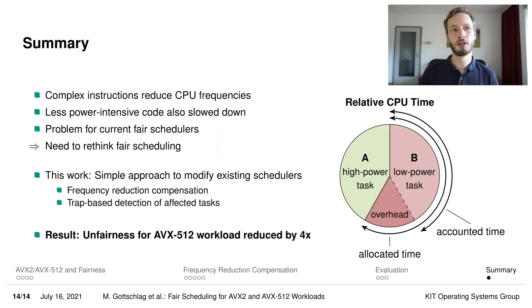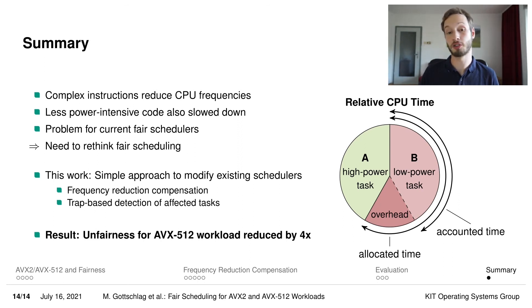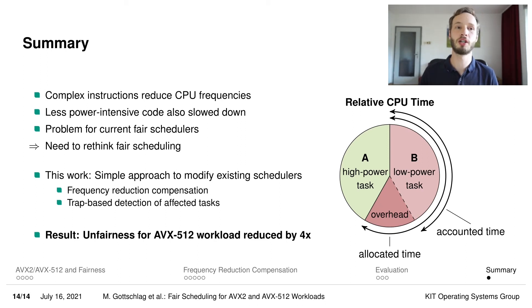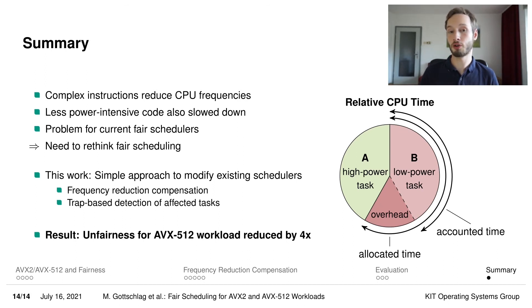To summarize: complex power-intensive instructions have the potential to reduce frequencies both on current Intel CPUs as well as probably most future CPUs as well. This frequency reduction often also affects other applications which do not use any power-intensive instructions, which is a problem in terms of fairness. We presented frequency reduction compensation as a very simple modification to existing fair schedulers, which is able to reduce the unfairness in workloads involving AVX512 by a factor of 4. With this, I conclude my talk, and if you have any further questions, feel free to ask during the conference session.